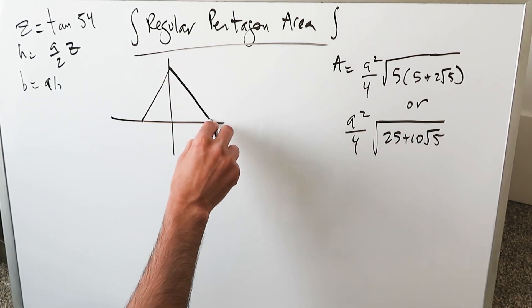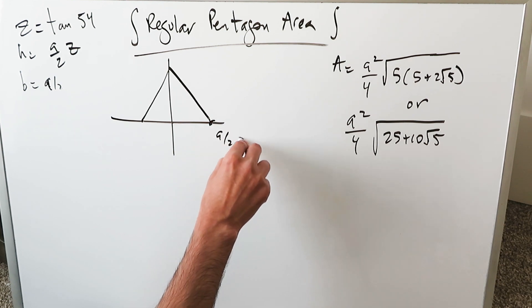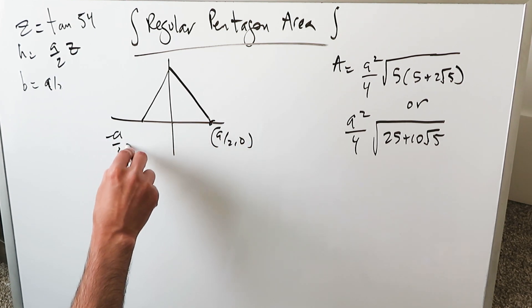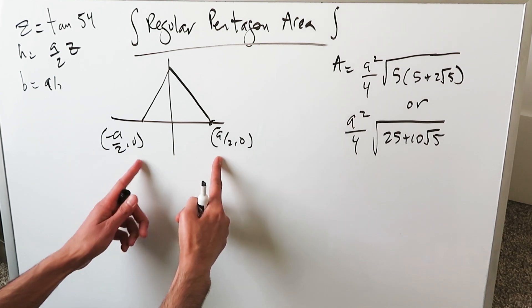The same triangle I've plucked it out. You know this here is A over 2 comma 0. This is minus A over 2 comma 0. All of this right here is A.